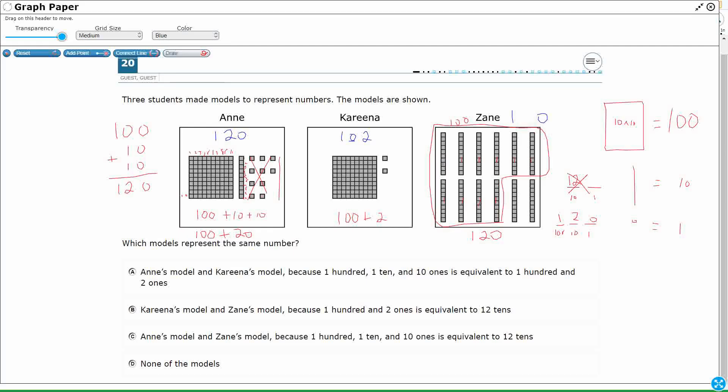So Zane and Anne have the same numbers, but we need to figure that out and why. Which models represent the same number - Anne and Karina? No. Looking for Anne and Zane. Karina and Zane, nope. Anne and Zane, there we go, because 100, 110, and 10 ones is equivalent to 12 tens. Yes, that's what I had right there, that's 120, and we figured out that 12 tens is also 120, so my answer is C.